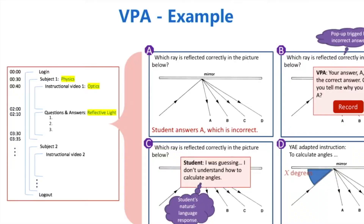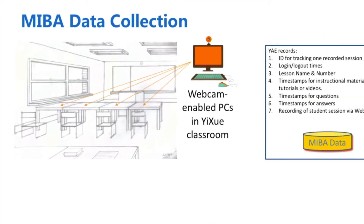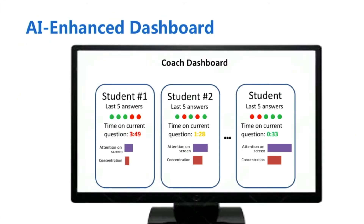There are two examples. One is our VPA — Virtual Personalized Assistant — which is a dialogue-based agent that helps diagnose students' mistake reasons. We also have another project using MIBA — Model Integrated Behavior Analysis — to help give students and teachers alerts about when the human coach should intervene in the process.